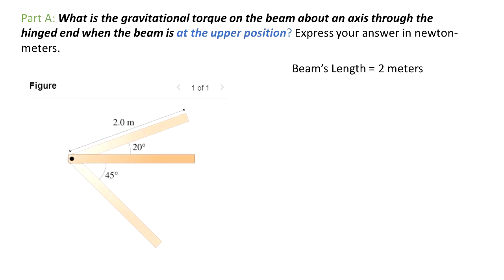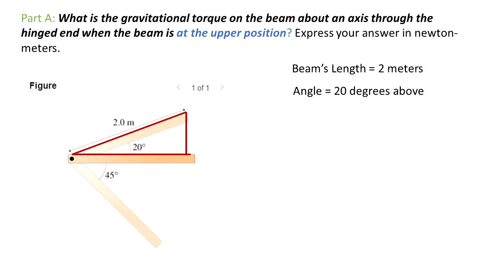We assume that the mass distribution in this beam is uniform. It is given that the total length of the beam is 2 meters. The red imaginary lines are a reference for us to identify the right triangle that has an angle of 20 degrees above the horizontal, as we can see from this picture. The beam's geometric center is located 1 meter to the right of the hinged end.